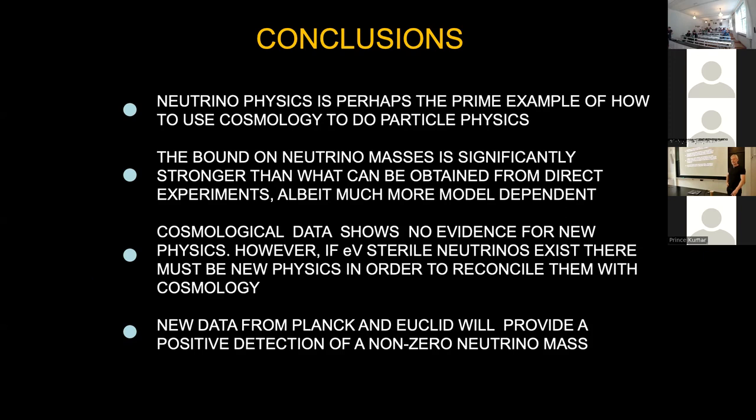Now that Euclid is launched, how many years do we have to wait for the first data release? Something like a year and a half. First it has to go to L2, then be calibrated, then start observing. It finishes a full-sky survey in about six months, but then it takes time. So the first data release plus accompanying papers will probably be about a year and a half from now.